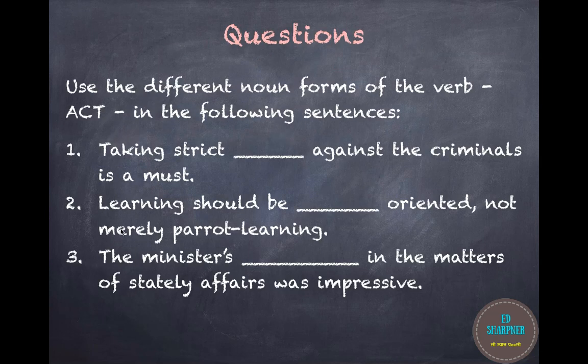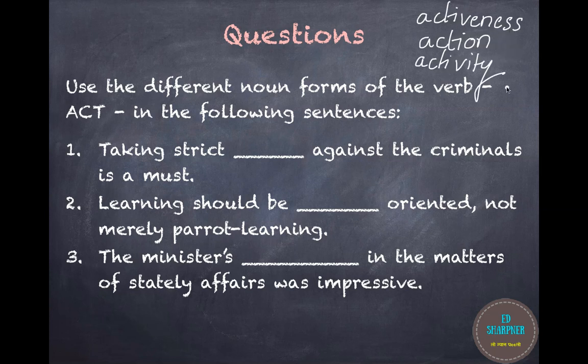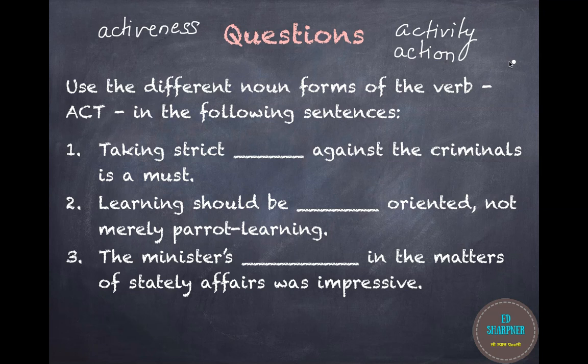Now that we have finished learning all the kinds of nouns, let us look at a few questions. Use the different noun forms of the verb 'act' in the following sentences. Take a minute to pause the video and think of all the noun forms of the verb act. There are three noun forms: action, activity, and activeness. Decide which comes where.